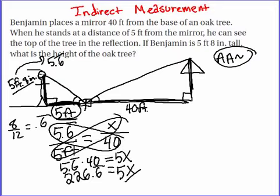We divide by 5 on both sides, and then we end up with 45.3 repeating equals X.